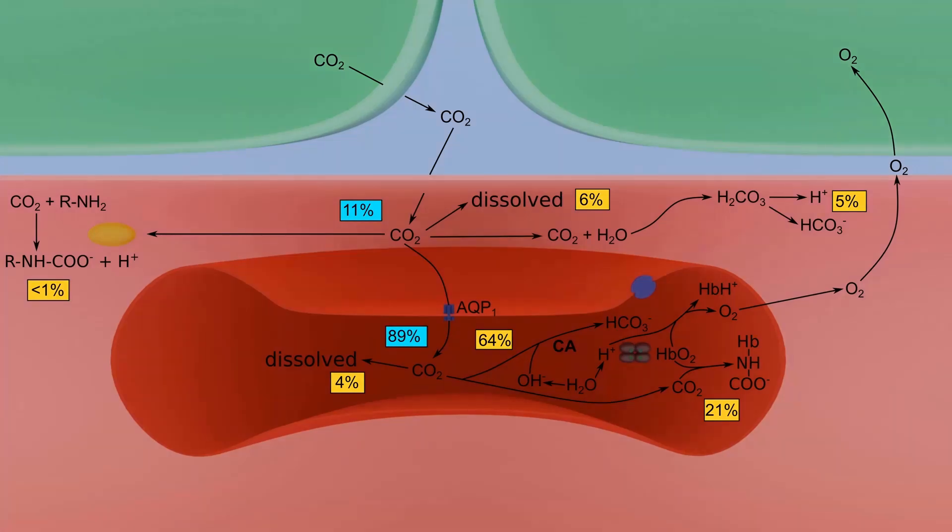Once dissociated from the amino groups, the H+ ions combine with the protein chains of the hemoglobin molecule. Thus, hemoglobin acts as a buffer to prevent pH fluctuations. It should be noted that deoxyhemoglobin is a better buffer compared to oxyhemoglobin.